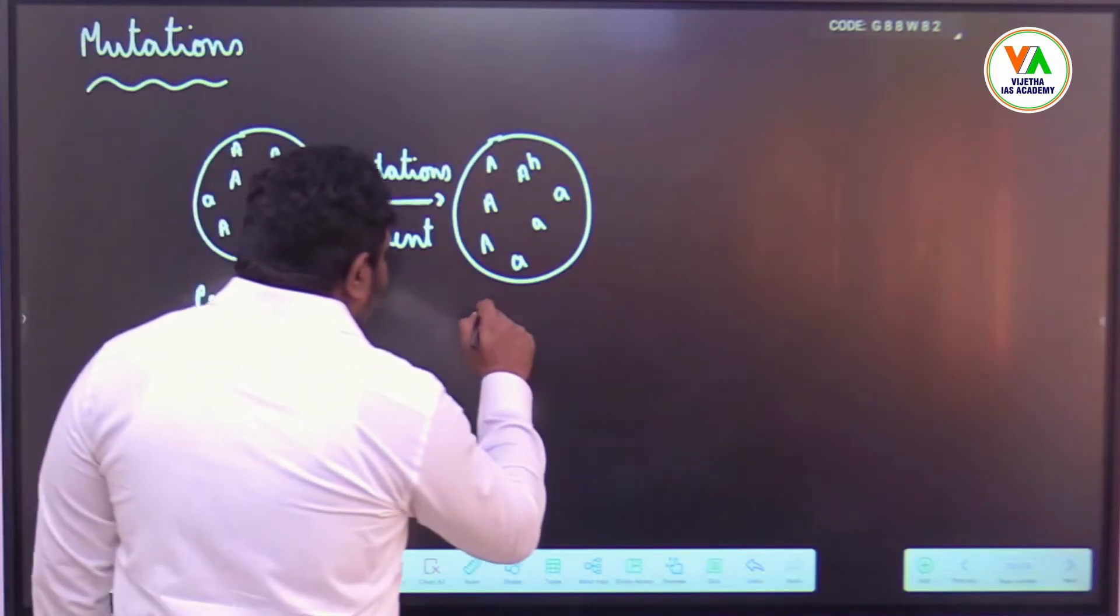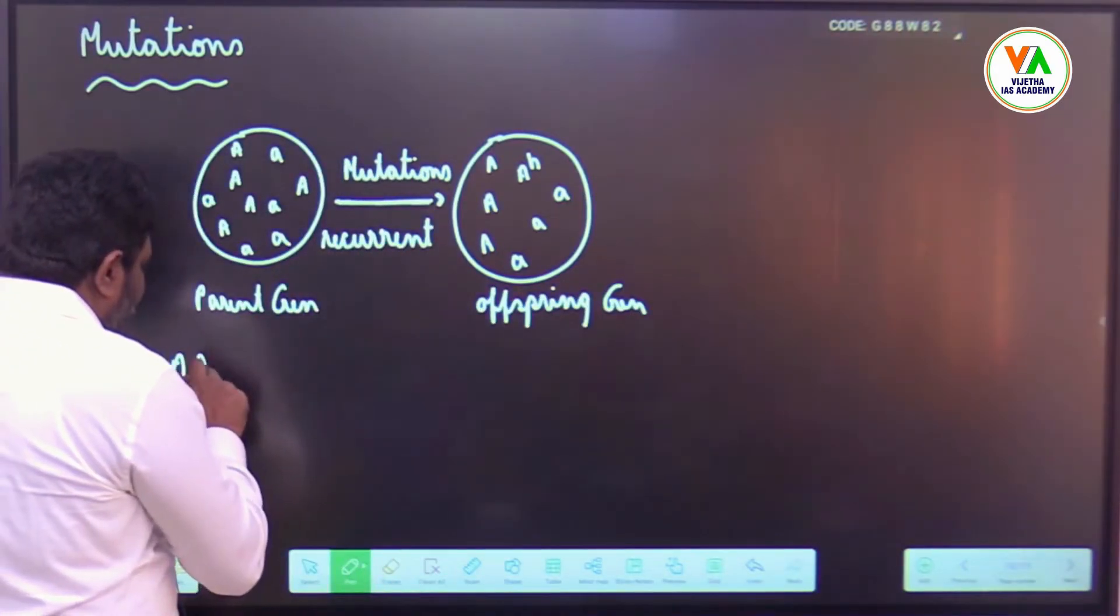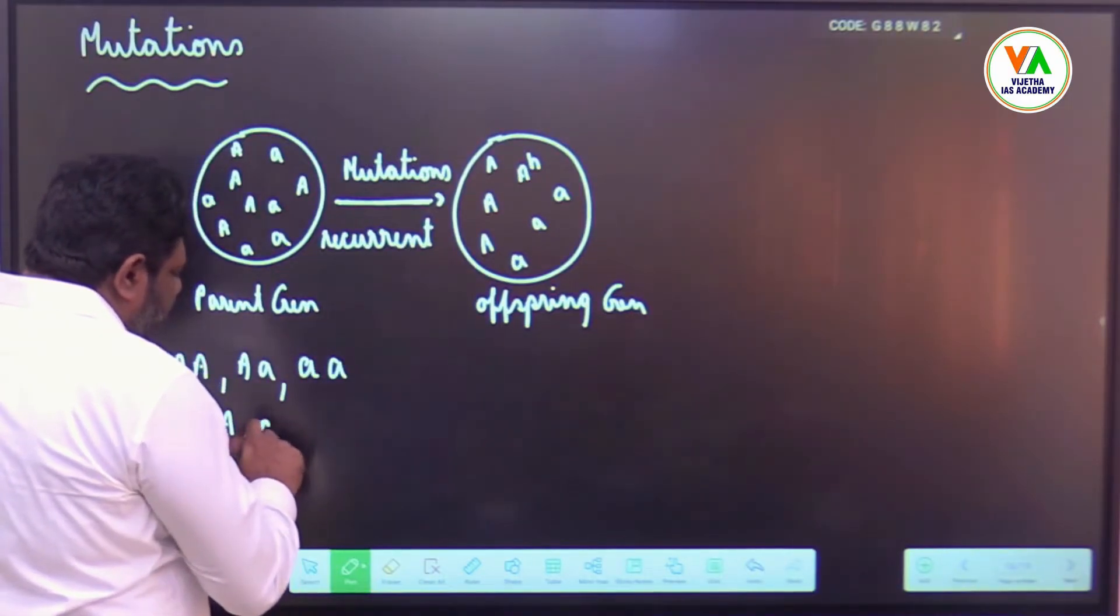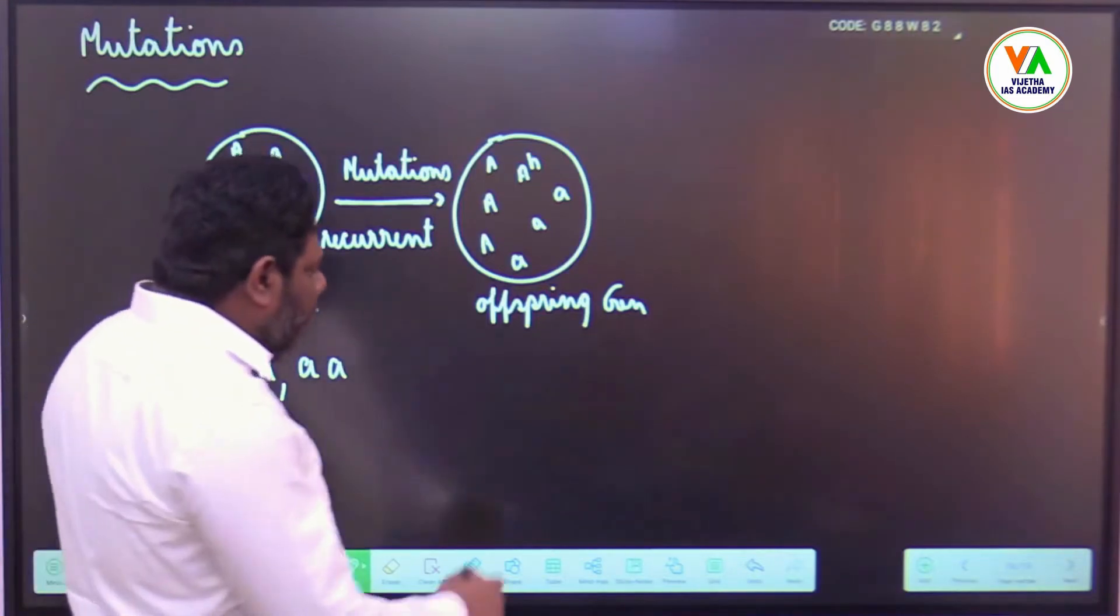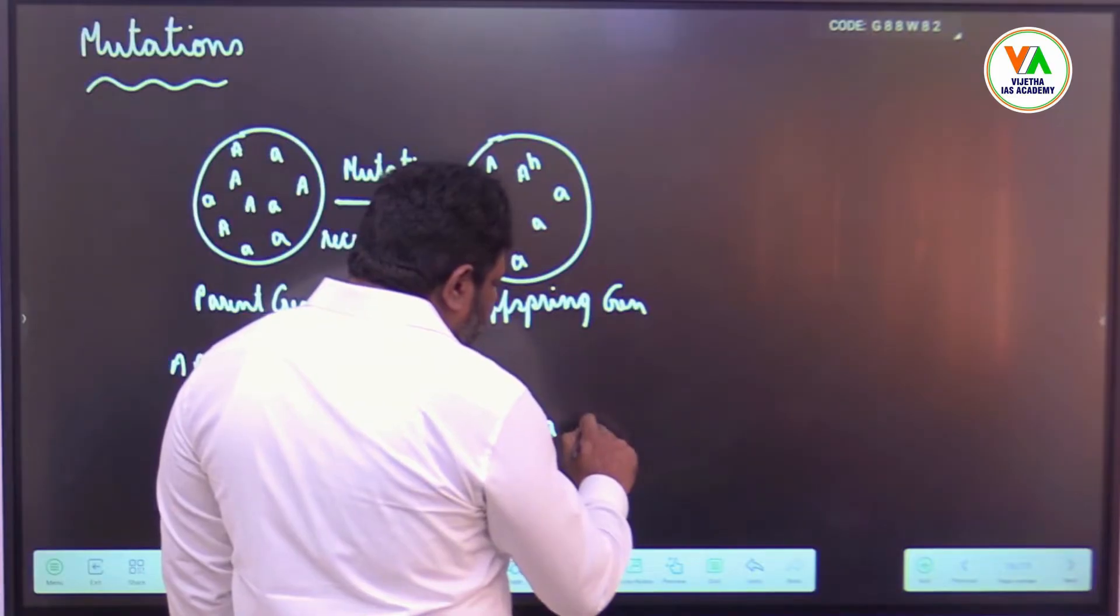Here the genotypes are capital A capital A, capital A small a, small a small a, and the alleles are capital A small a. Now here the alleles is capital A small a capital A H.